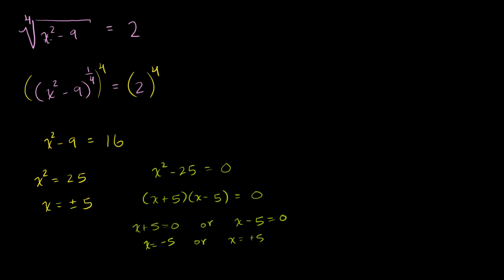Well, whether we put negative 5 or positive 5 here, this right here is going to be 25. So you get the fourth root of 25 minus 9, which is the fourth root of 16. And 16, so this is the fourth root of 16, which is equal to 16 to the 1 fourth power, which is indeed 2. So both of these work. When you square either of these, you do indeed get 25.